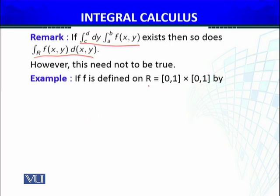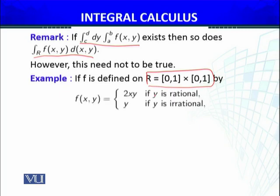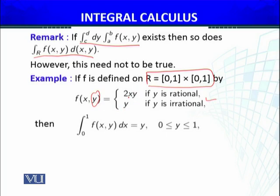So we have a counter example. If f is defined on this rectangle R by that function: f(x, y) = 2xy if y is rational, and y if y is irrational. So for y being rational and irrational, the function is a piecewise defined function.